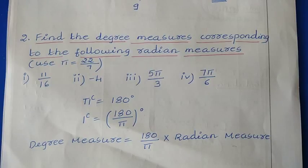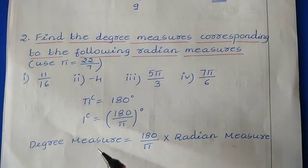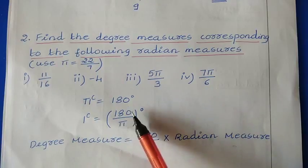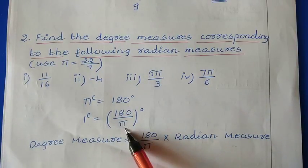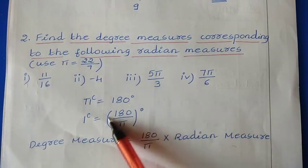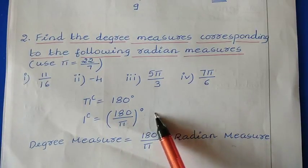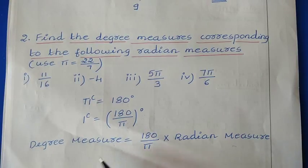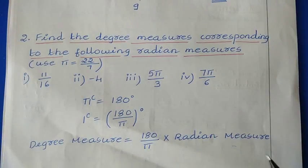In this question, they have given radian measure and we need to convert that into degree measure. The relation between degree measure and radian measure is: π radian is equal to 180 degrees. So, 1 radian is equal to 180 divided by π degrees. If you multiply this value to the radian measure, then you can get the required degree measure. The formula is: degree measure = (180/π) × radian measure.